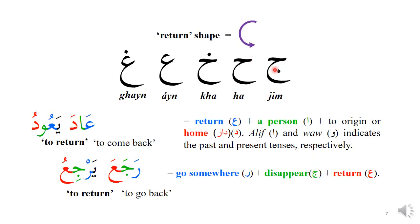JIM and HA contain a return shape — many words related to these three letters will have a return meaning built into them. Two other letters, AYN and RA, are also related to the meaning of return. For example, 'ada' and 'ya'udu' means to return or come back. The reason this means return is that it is written in a return shape. AYN and RA have two of these return shapes, while JIM, HA, and KHA have a single return shape.